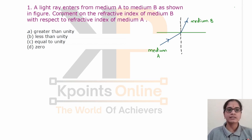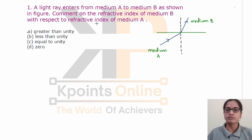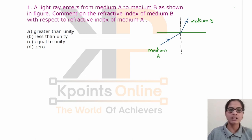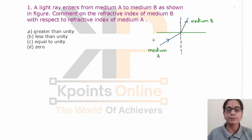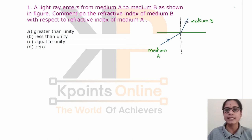First question: a light ray enters from medium A to medium B as shown in figure. Comment on the refractive index of medium B with respect to refractive index of medium A. The options are greater than unity, less than unity, equal to unity, or zero. A ray of light is entering from medium A to medium B, so refraction has taken place. This ray of light has bent towards the normal, so the refractive index of medium B is more.